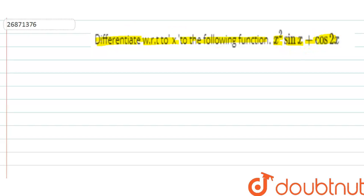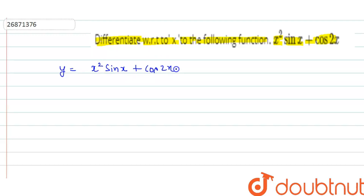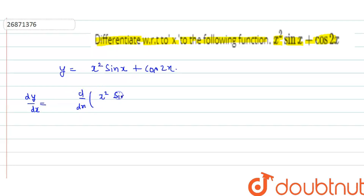Now, we will see how to approach. First of all, I will consider the function y is equal to x squared sin x plus cos 2x. So, if I find dy by dx, then dy by dx is equal to d by dx of x squared sin x plus cos 2x.